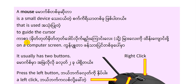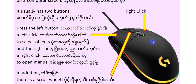On a computer screen, the mouse usually has two buttons. There is a right button and a left button.